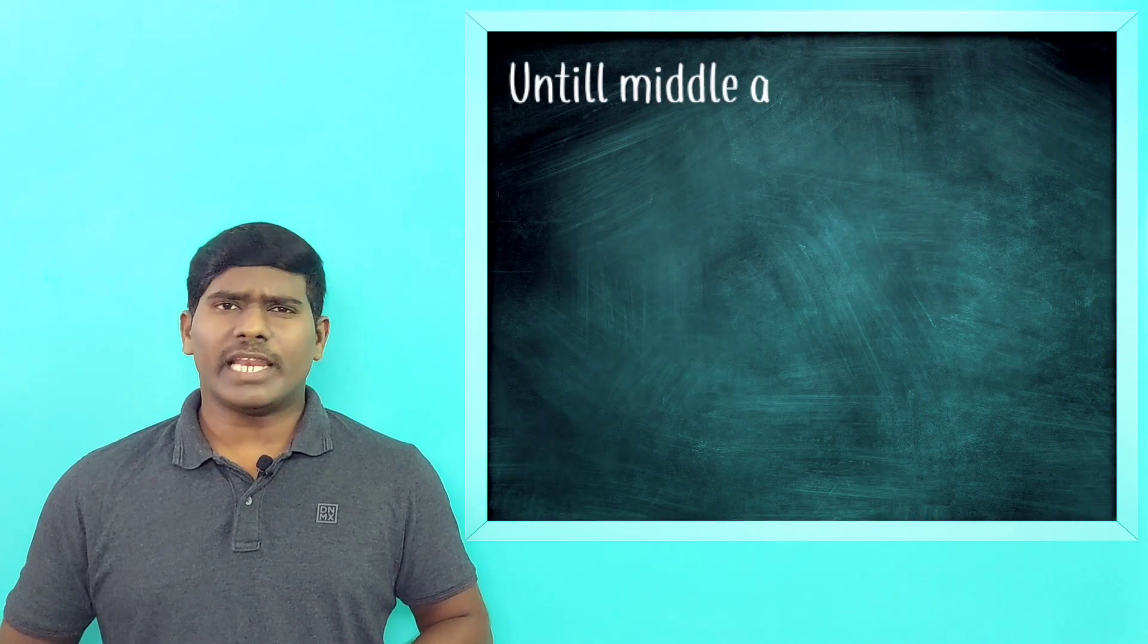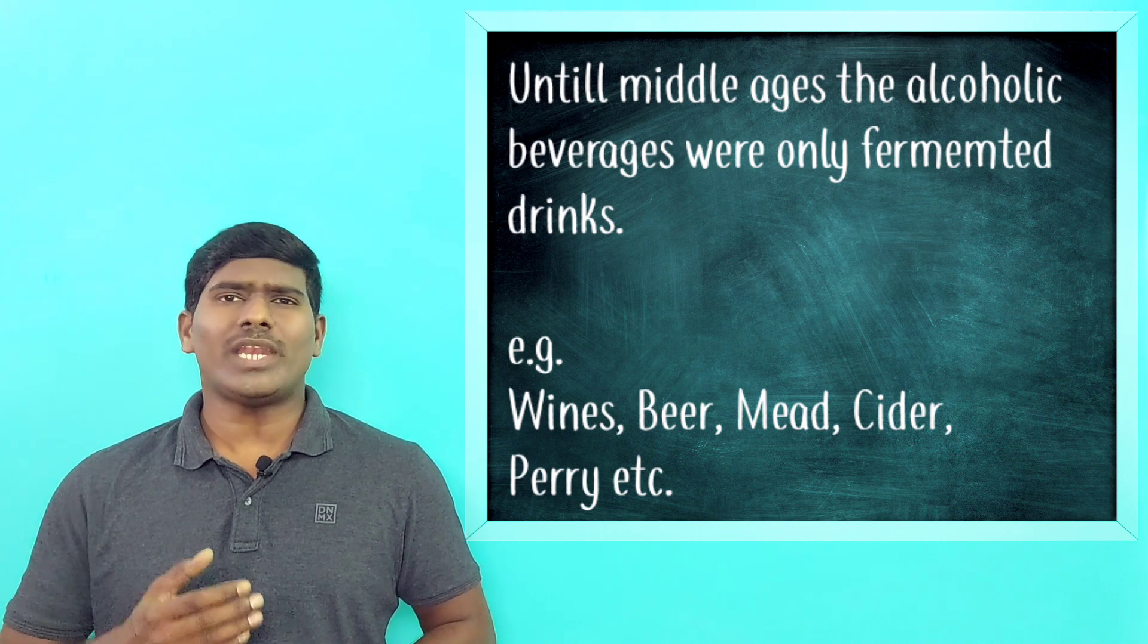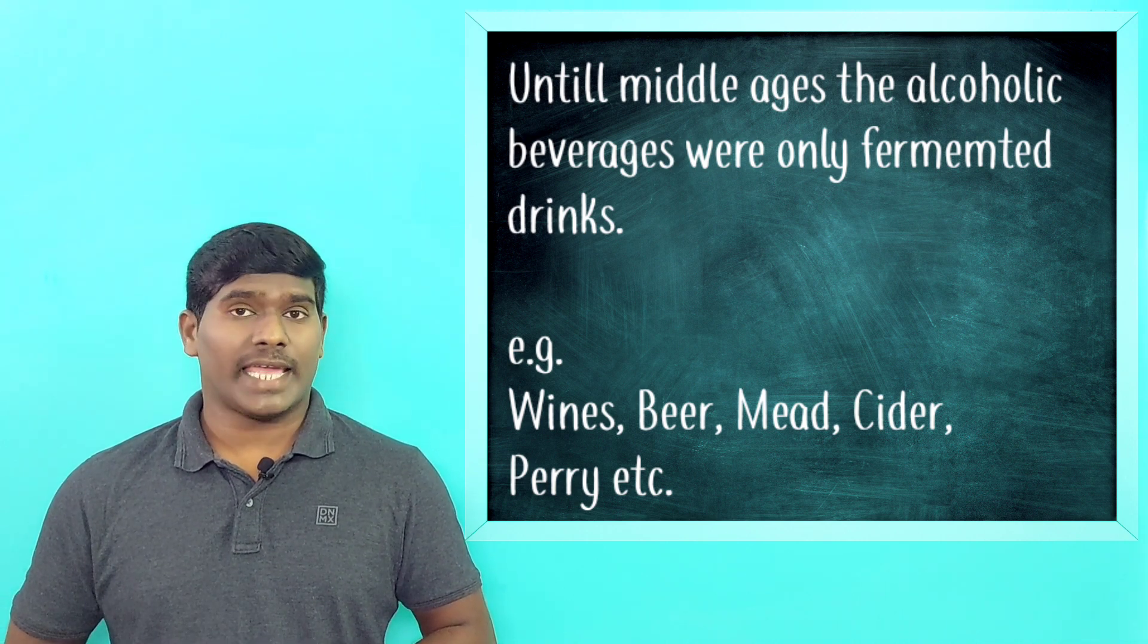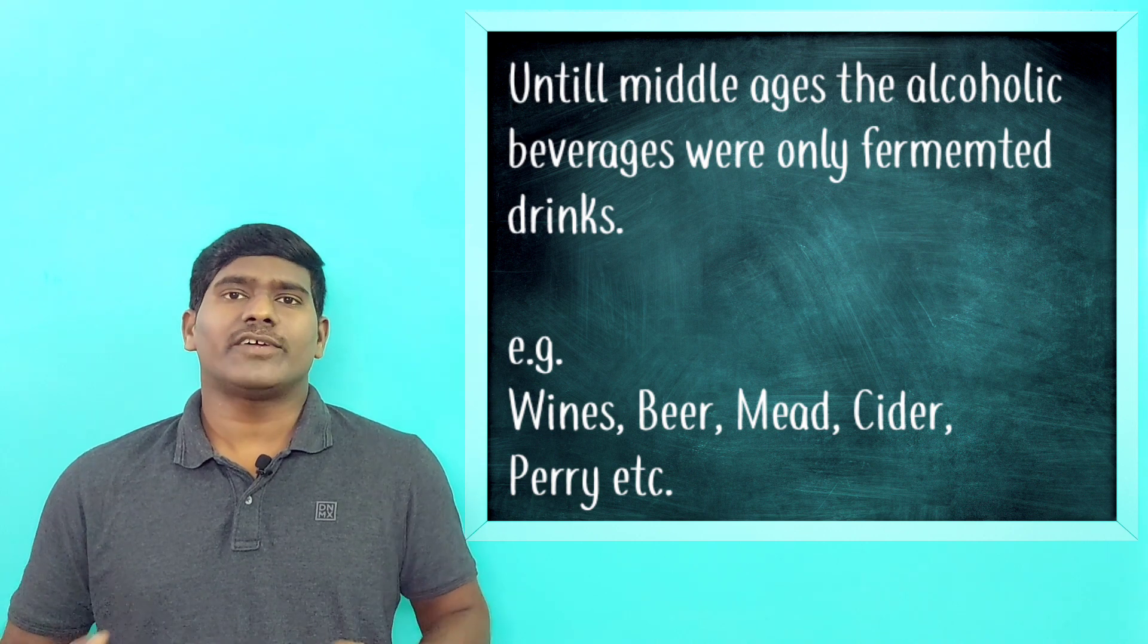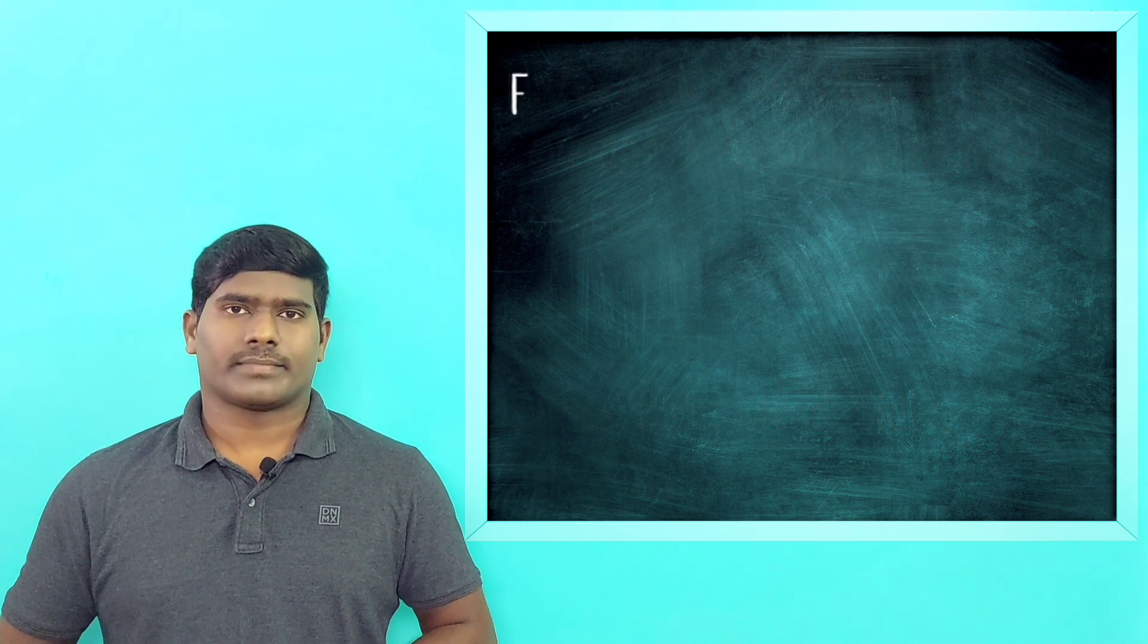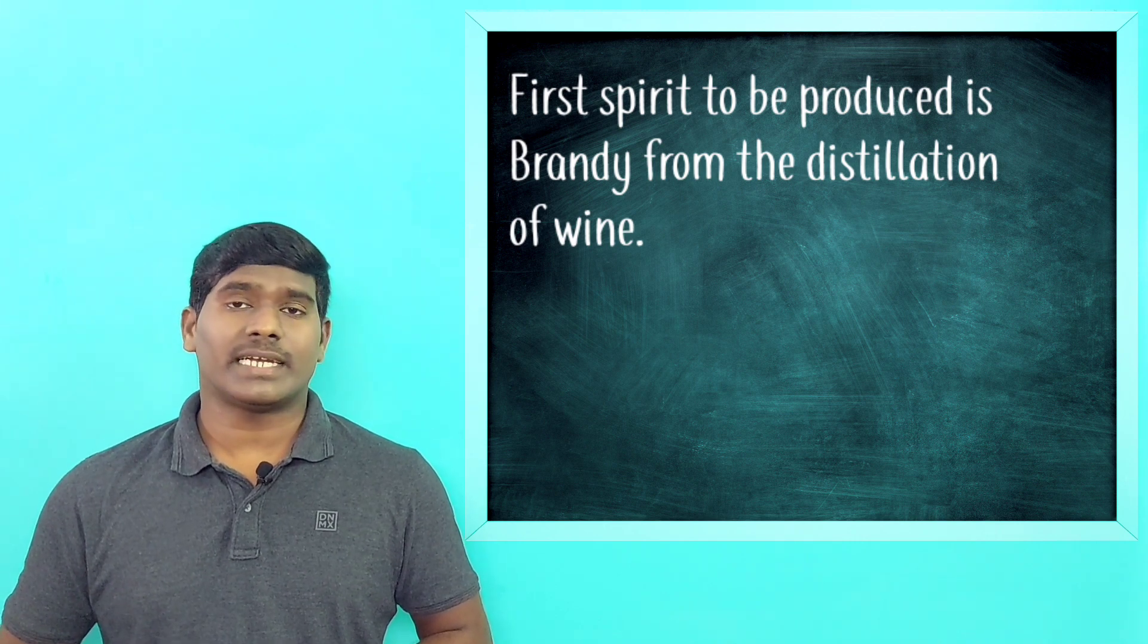Until the Middle Ages, the alcoholic beverages consumed in Europe were solely fermented beverages like wine, beer, mead, cider and other fruit-based fermented liquids. The first form of spirit produced was brandy, which is distilled from wine.